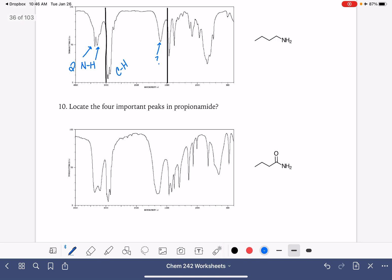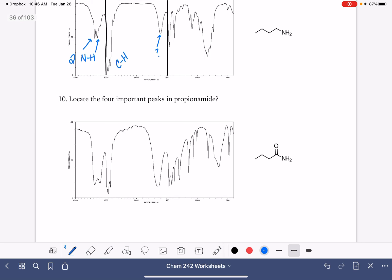And then last but not least, the four important peaks in this molecule. Let's draw our lines, 1500 and 3000. We've got our carbon oxygen double bond, very broad and very strong. We have our standard CH peaks, and then we have our two NH peaks right there.